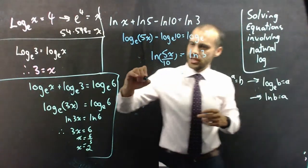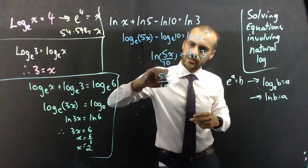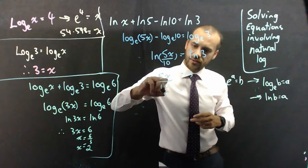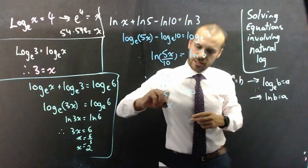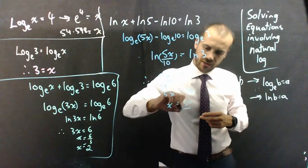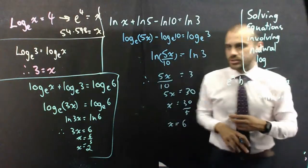So, now I can just say, therefore, 5x over 10 equals 3. 5x equals 30. 10 times 3. x equals 30 divided by 5. x equals 6.